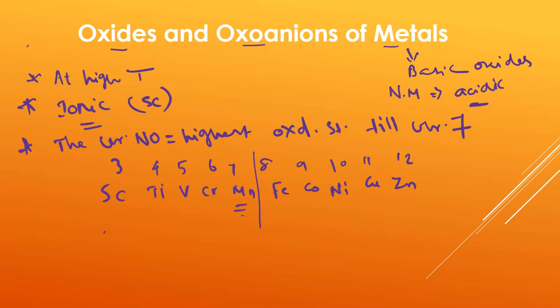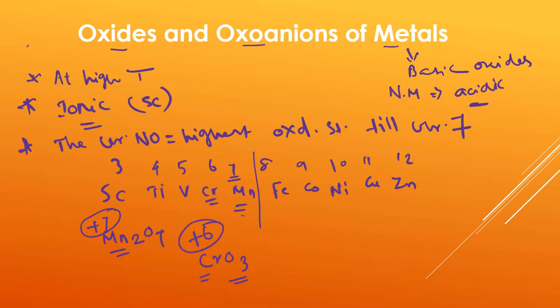For example, in Mn₂O₇, the oxidation state of Mn is +7, so the highest oxidation state equals the group number 7. Similarly, CrO₃ — the oxidation state of chromium here is +6, which is the highest oxidation state for chromium in group 6. So till group 7, the highest oxidation number coincides with the group number.